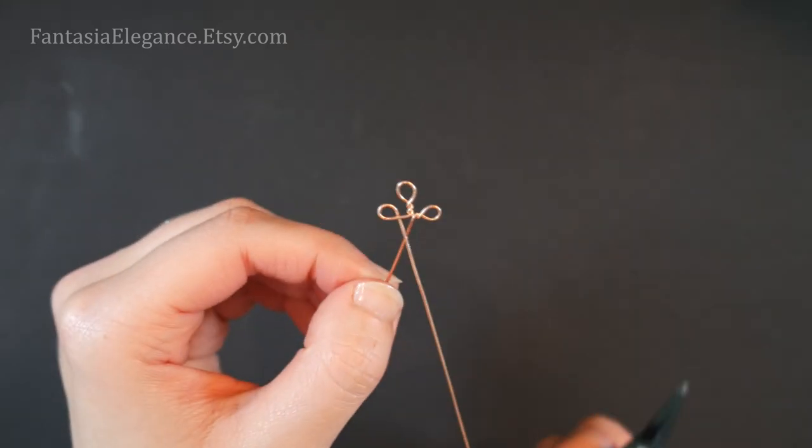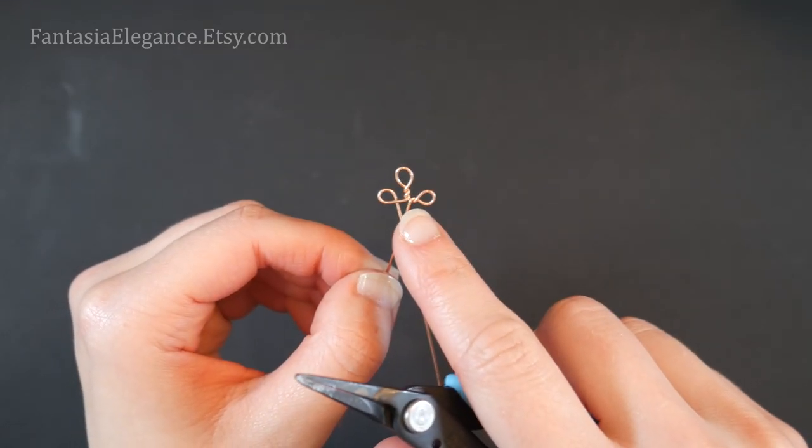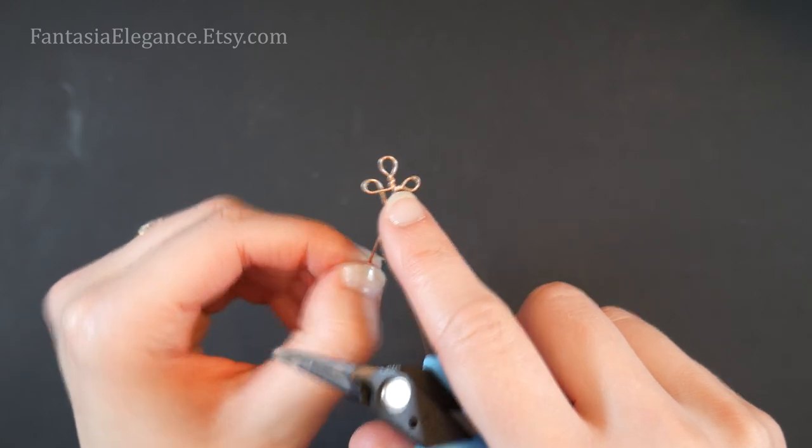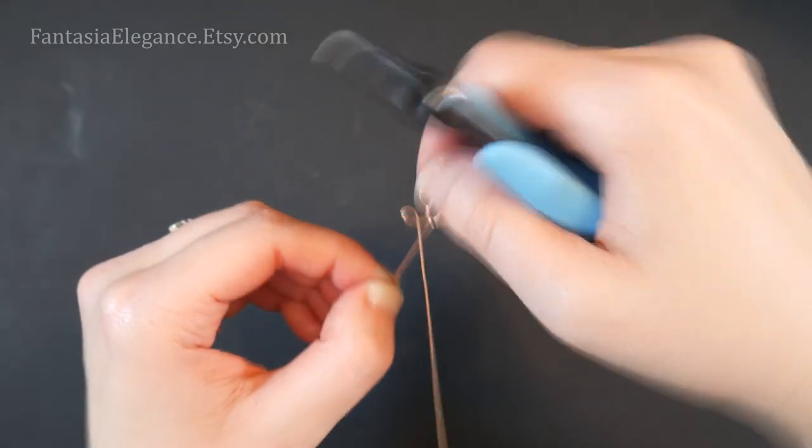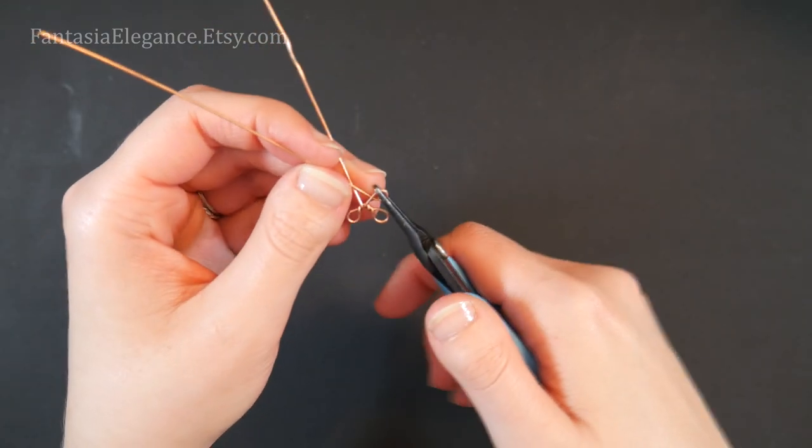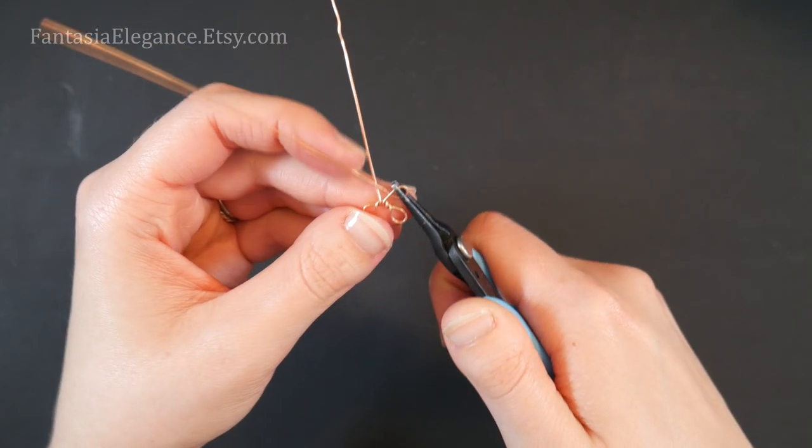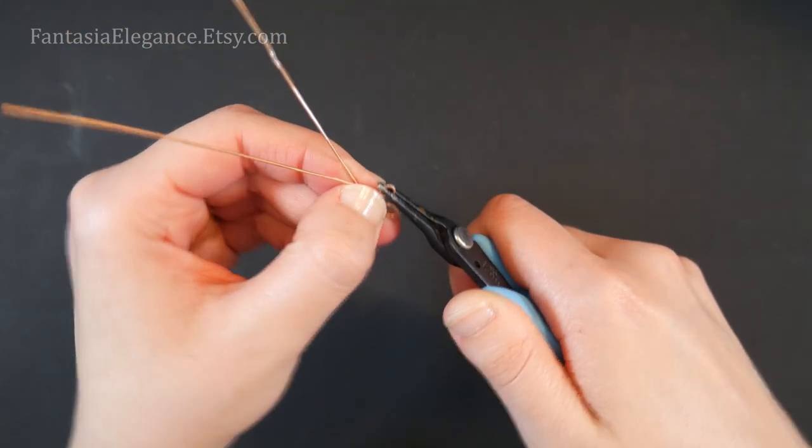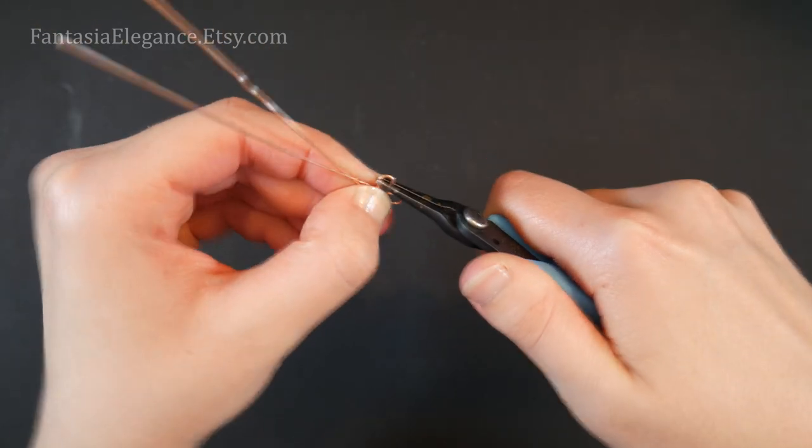And we'll do the same thing on the other side—again gripping with my pliers and my left hand, we'll just put in a little twist right there.